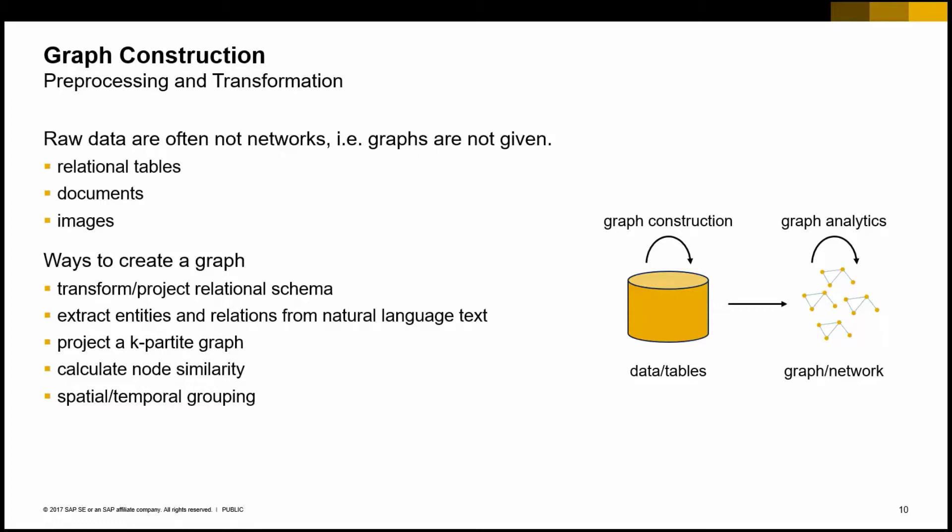If you're looking at natural language text, there are approaches in the text analysis domain that let you extract entities such as persons and organizations, and also understand the relationships between these entities. This is typically a form of pre-processing or transformation you need to deal with in knowledge graph projects, where the task is how to extract knowledge out of natural language text.